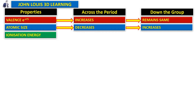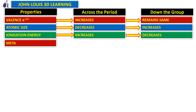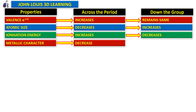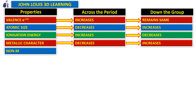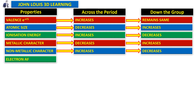Next is ionization energy — it increases across the period, therefore it decreases down the group. Metallic character decreases across the period, therefore it increases down the group. Non-metallic character increases across the period, therefore it decreases down the group.